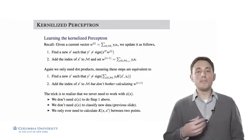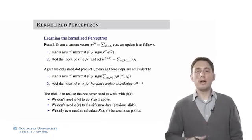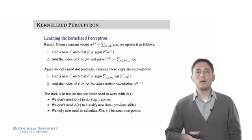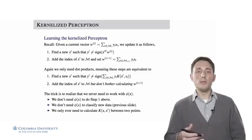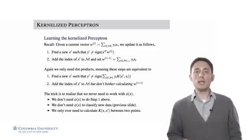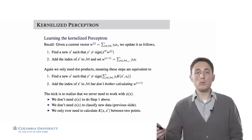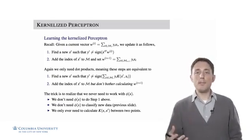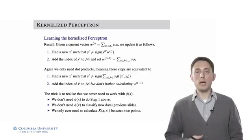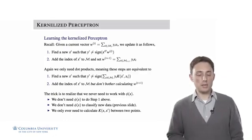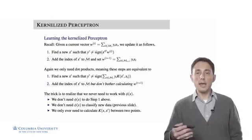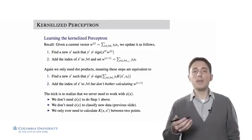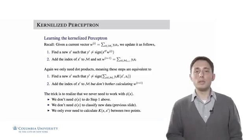We've discussed making predictions with the perceptron using the kernel without doing the mapping. However, there was also a learning algorithm to construct the sequence of misclassified points in set M, which might also seem to require a higher dimensional mapping. But the answer is no — we never actually need to calculate the feature mapping. We only ever need to work with the kernel function between different points in our dataset.